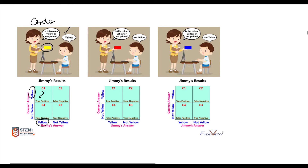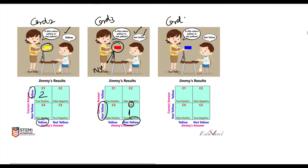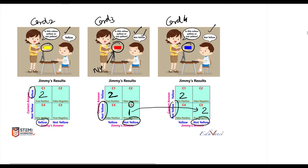For card 3, she shows him a red card and Jimmy answers not yellow. Since it's a not-yellow card and he answered not yellow, we fill cell C3 with 1. For card 4, she shows him a blue card and he answers not yellow, so the count in C3 increases from 1 to 2. We carry forward: 2 in C1 and 2 in C3, with 4 cards shown and 4 values filled.